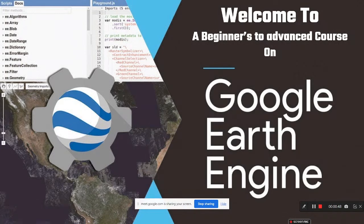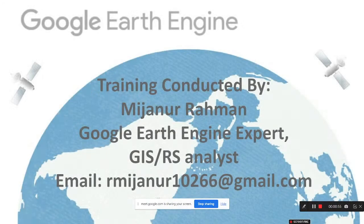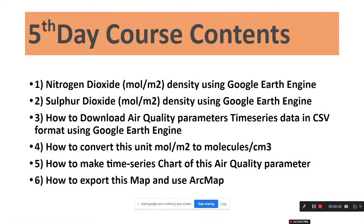Welcome to the Beginners to Advance course on Google Earth Engine for Remote Sensing Analysis. Today is our fifth class, and we will mainly discuss about the air quality parameters — how we can easily make different types of air quality parameter density maps using the Google Earth Engine platform. We are using the Sentinel-5 satellite imagery for nitrogen dioxide, sulfur dioxide, methane, carbon monoxide, and all other gases available from the Sentinel-5 sensor.